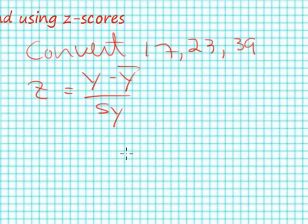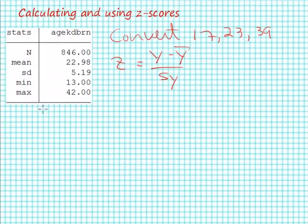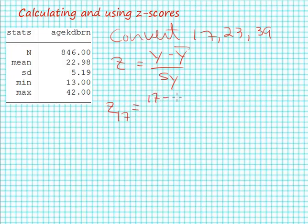The statistics on the left show me that my mean is approximately 23, my standard deviation is approximately 5.19. We're going to plug numbers into these formulas and calculate the associated z-scores. A z-score for somebody 17 years old equals 17 minus 22.98 divided by 5.19, which equals minus 5.98 divided by 5.19.